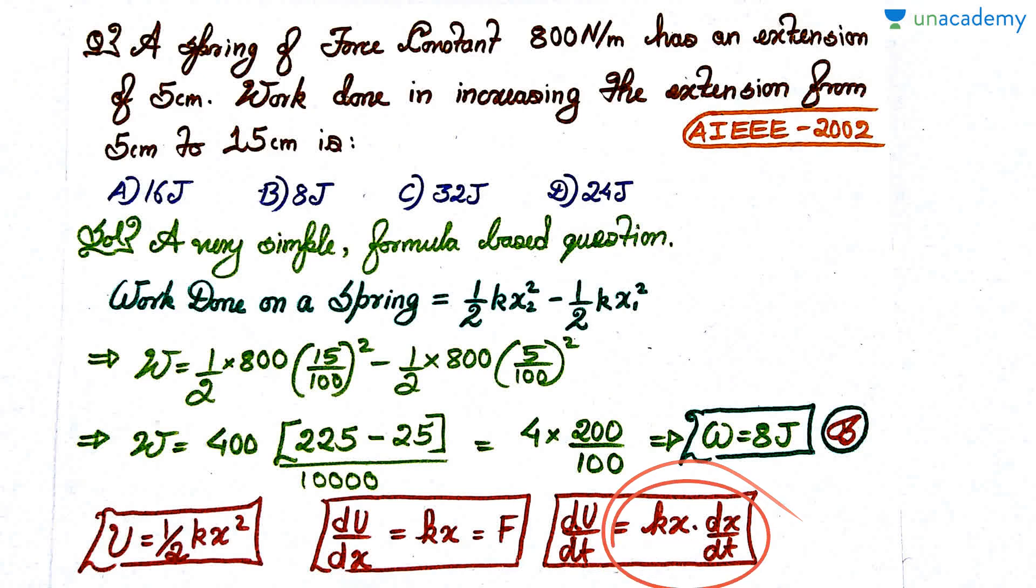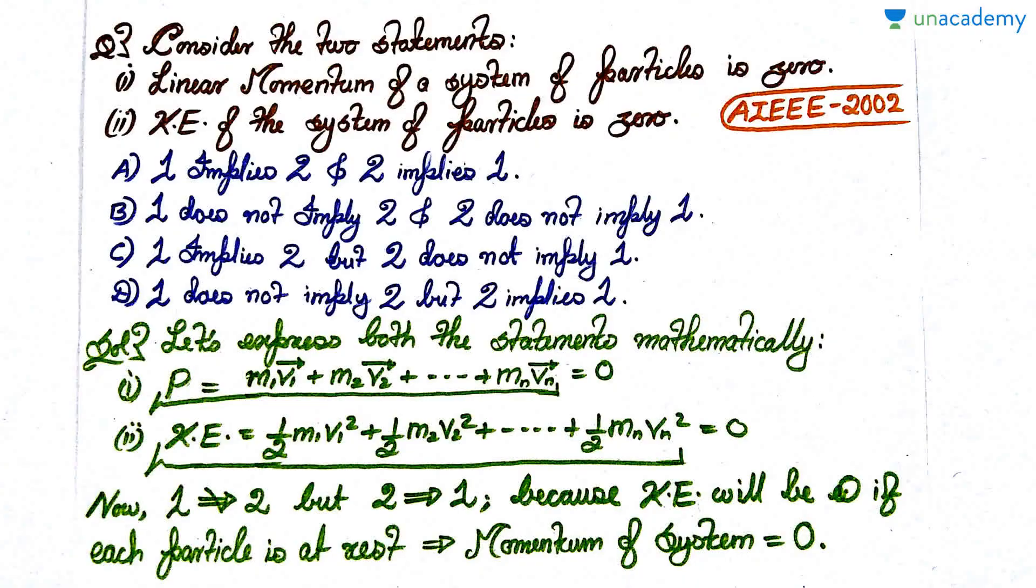dx/dt is velocity, and kx is force, and force into velocity is power. This is exactly what power is: the rate at which the power is being delivered to the spring. This is power delivered to the spring, equal to the rate at which the potential energy is being stored in the spring. That's some additional information I wanted you to have because some questions can be asked on these subtle concepts which are not very well known.